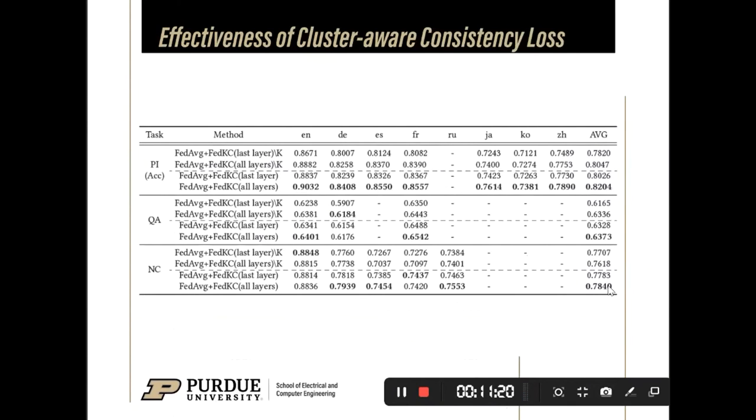In the next, I will show the effectiveness of the proposed cluster-aware consistency loss. We report the results of knowledge composition with and without k-means. For the knowledge composition without k-means, it means that just using the average of all data representation as representative data. It also can be considered as the k-means with only one centroid or one cluster.